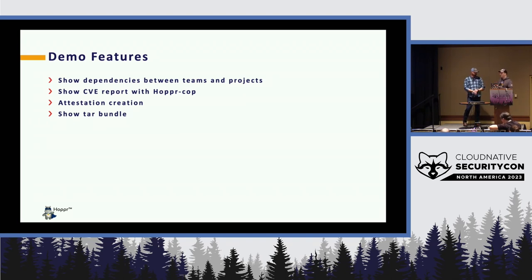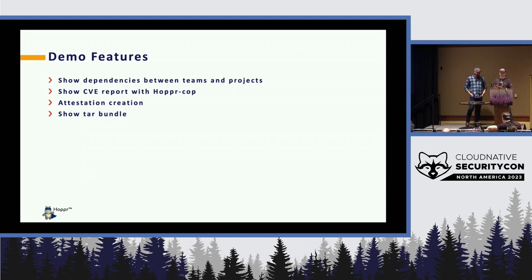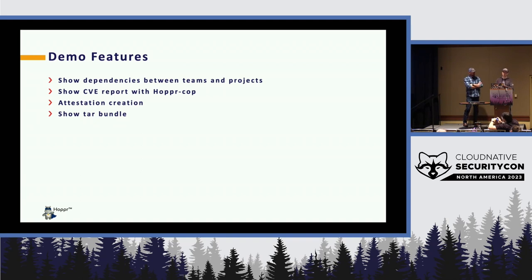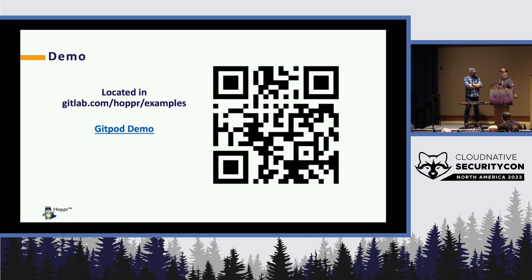Jared is going to show the demo. Here are some key features to look for: the dependencies between teams and a security team showing the tree structure, a CVE report with HopperCop, attestation creation and a layout file for verifying in-toto links, and the final bundle. This demo works in Gitpod — if you scan the QR code, you can pull it up and play with it yourself.